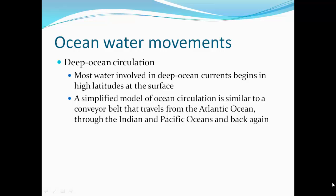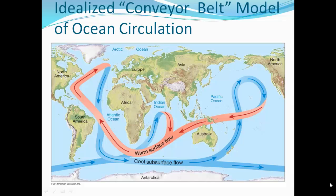Most water involved in deep ocean currents begins in the high latitudes at the surface. A simplified model of ocean circulation is similar to a conveyor belt that travels from the Atlantic Ocean through the Indian and Pacific Oceans and back again. In the idealized conveyor belt model, warm waters sink, become cold, and travel the Atlantic down to the south and into the Pacific, then rise up and warm again, traveling back at the surface. The current actually splits as it rises to the surface as warm water and continues as surface warm flow.